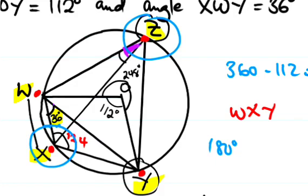So one twenty-four at the center, and using the cyclic quadrilateral theorem, we confirm that the angle WZY is 56 degrees.